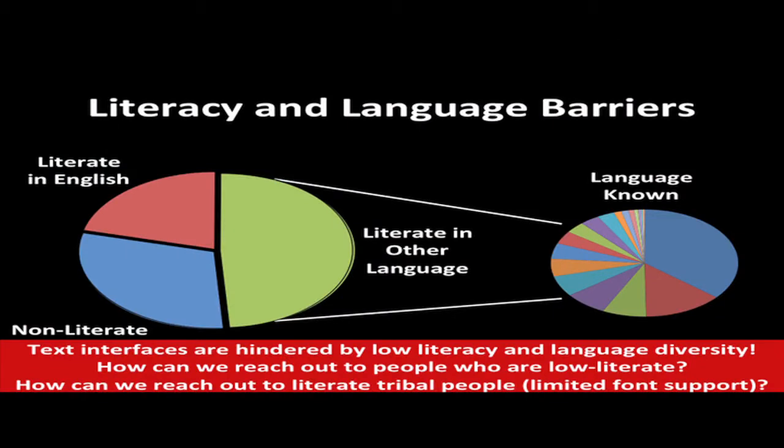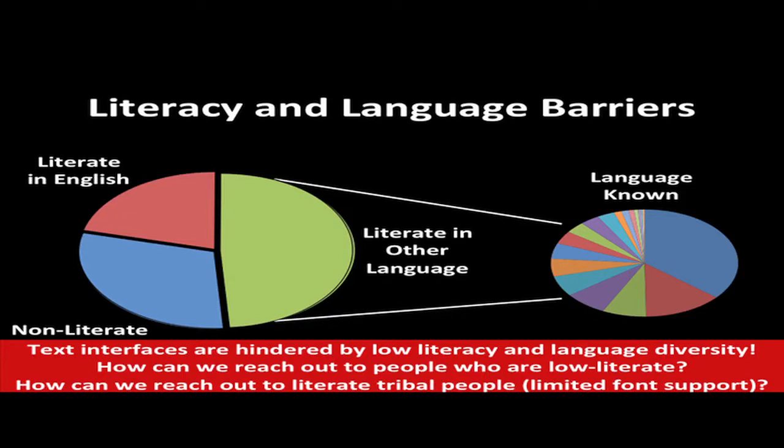There are several reasons for this. Illiteracy is a huge problem — it has been there for over 50 years and is not yet solved. 33% of people in India are illiterate, and 49% who are literate are literate in languages other than English. There are certain languages like Kui, Kuru, and Gondi which have millions of speakers and zero media sources at all. These are completely verbal communities with millions of speakers. Text interfaces are hindered by literacy and language barriers — but how can you reach out to those who are illiterate, or to literate tribal populations where mobile phones have no language support?